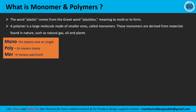The word 'plastic' actually comes from the Greek word 'plastikos,' meaning to mold and to form — meaning plastic can be formed into different shapes. That is a property of plastic: it can form into complex shapes. A polymer is a large molecule made up of smaller ones.